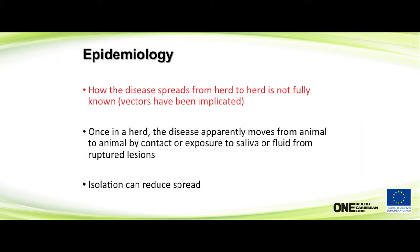How the disease spreads from herd to herd is not fully known. However, once in a herd, the disease moves from animal to animal very easily by contact and exposure to saliva, fluid, and ruptured lesions — similar to foot and mouth disease, as there are large quantities of virus within the lesions. Isolating that animal is the obvious way to stop it spreading.